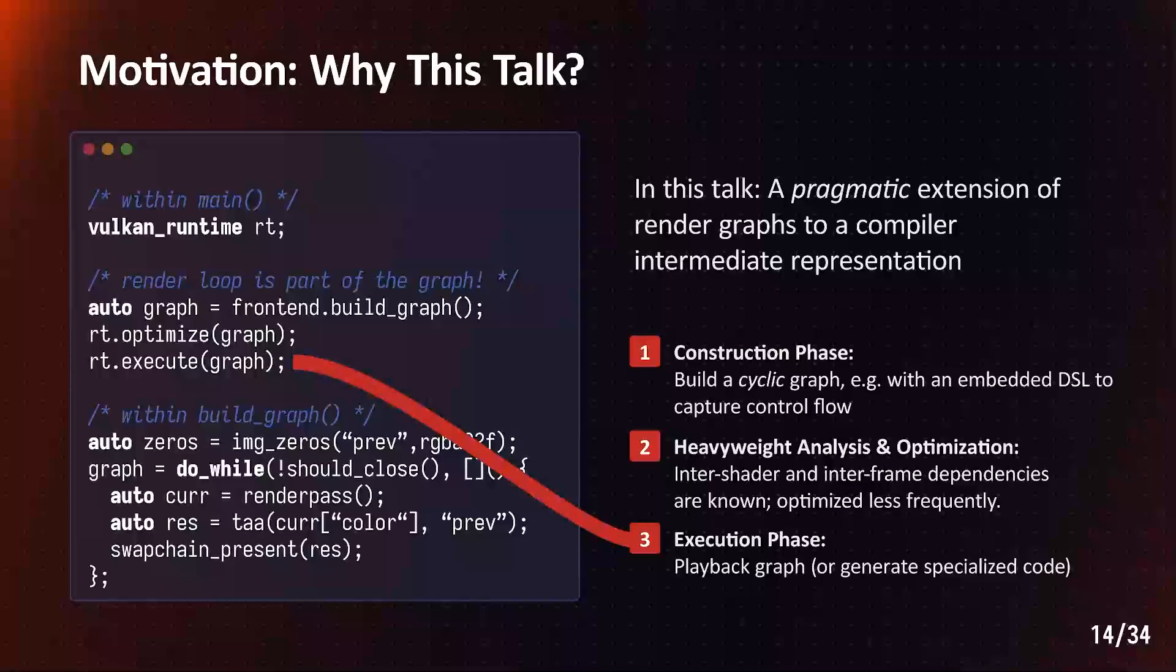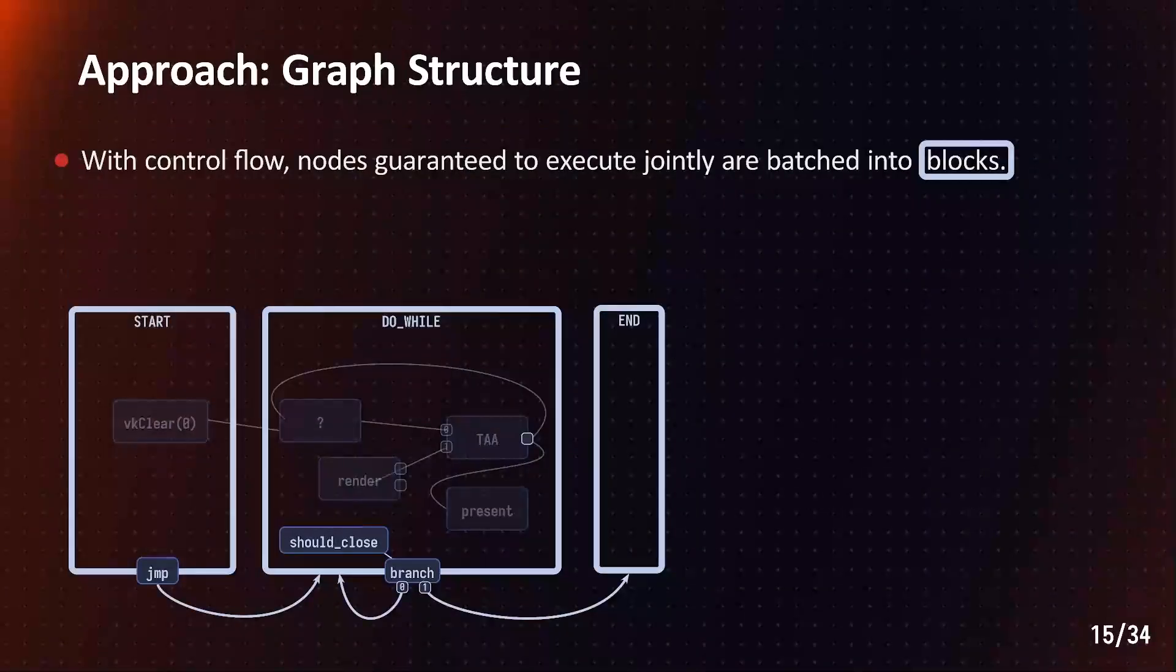In the example on the left, we are using an embedded DSL that uses a helper function do-while to capture the render loop. Since our graph contains control flow, we batch render passes that are guaranteed to execute together into blocks.